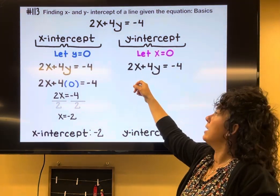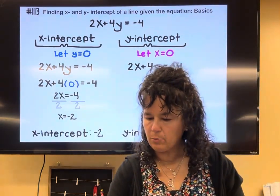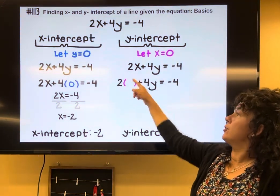I'm going to go in and this time replace the x with 0. So good notation, put a set of parentheses where the x used to be. Then I'm going to put a 0 in there.